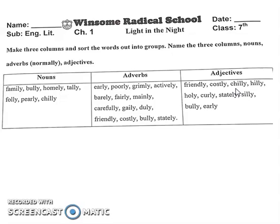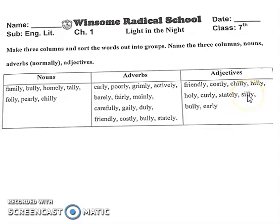Now our third column is adjectives: friendly — دوستانہ، costly — قیمتی، chilly — extremely cold، hilly — پہاڑی، holy — مقدس، curly — گھنگریالے بال جو ہوتے ہیں، stately — impressive and grand، یعنی grand in size, in appearance, or in manner ہو سکتا ہے۔ Silly — بیوقوف، bully — again یعنی ٹانگ کھینچنے والا، early — جلدی۔ These are all adjectives, students.